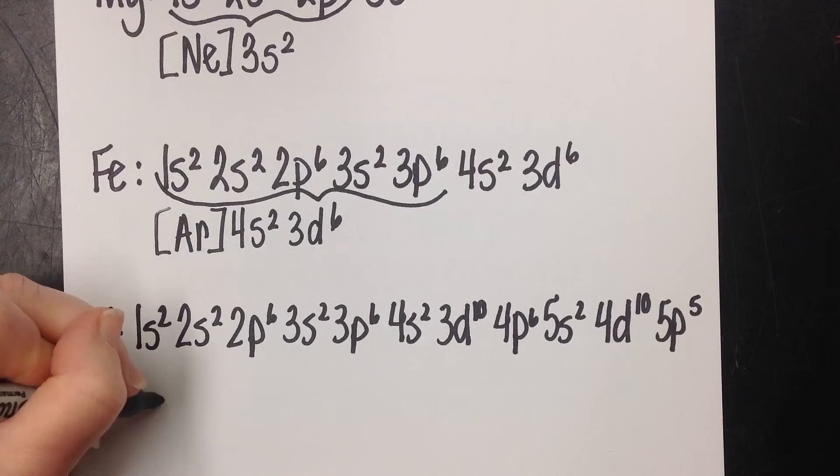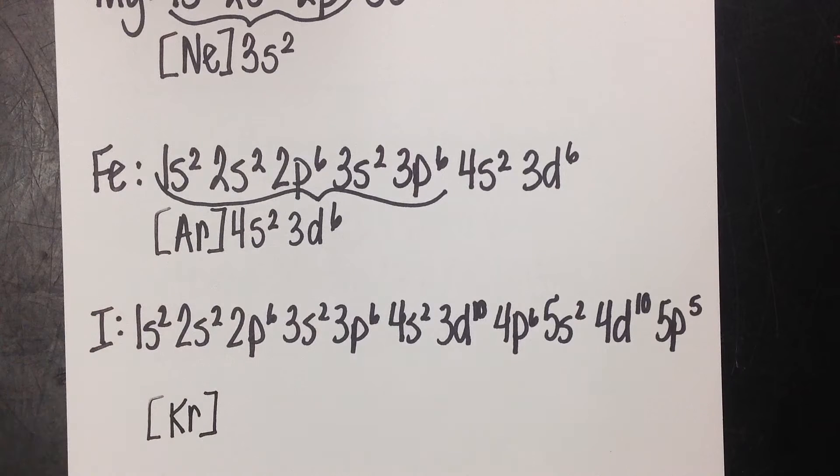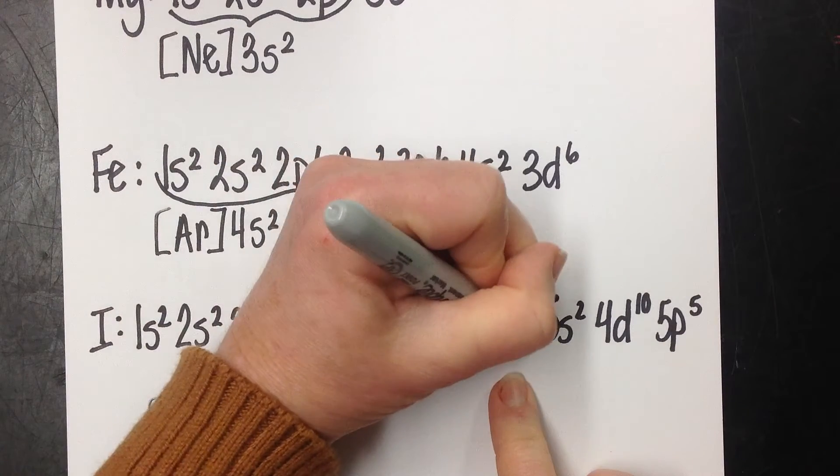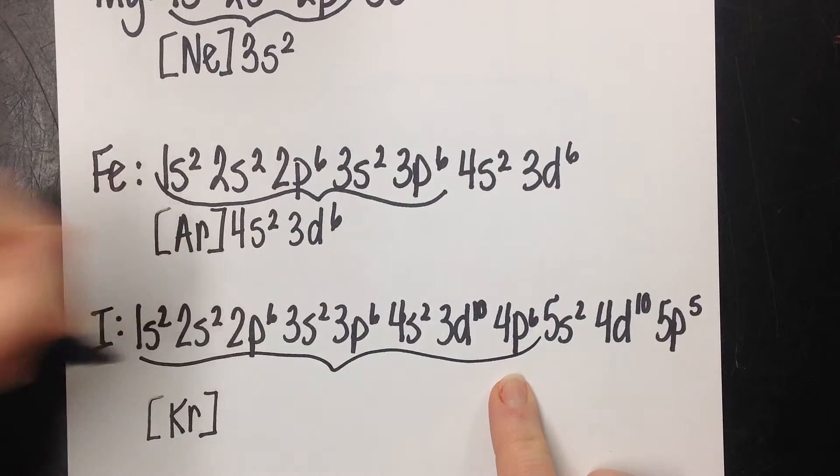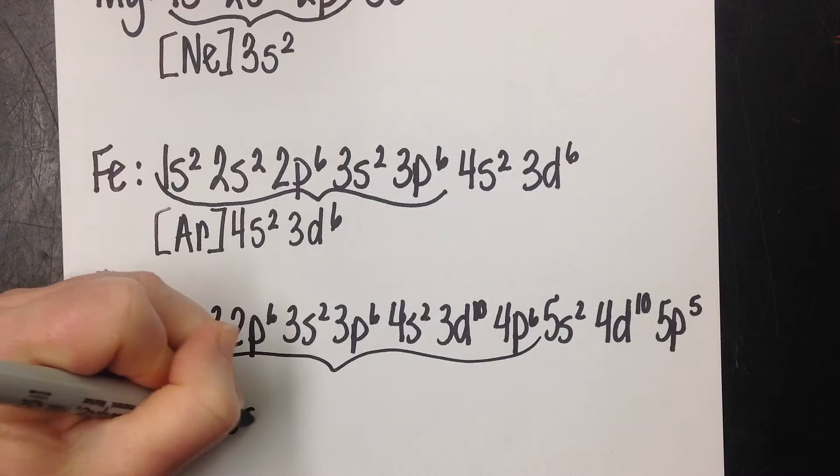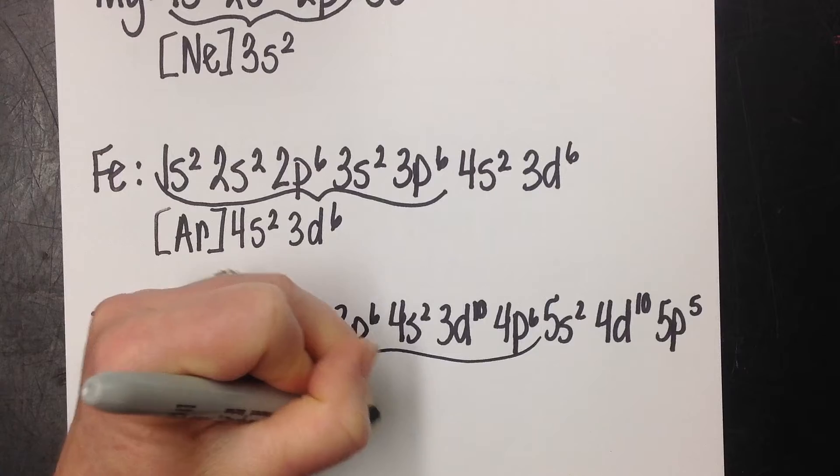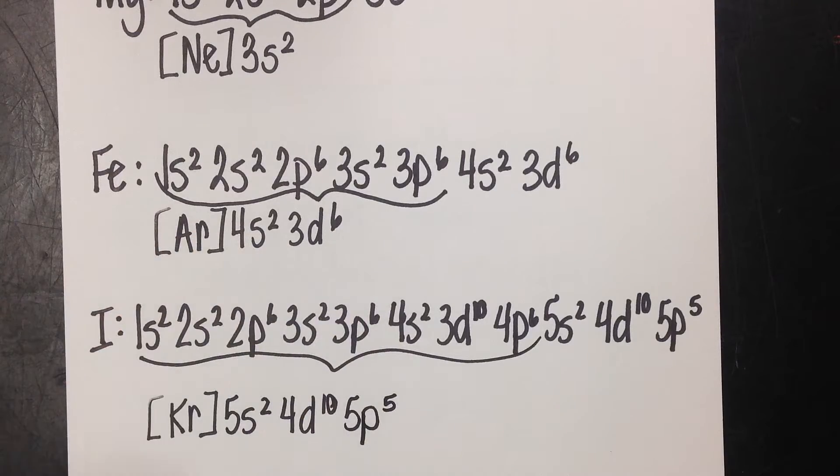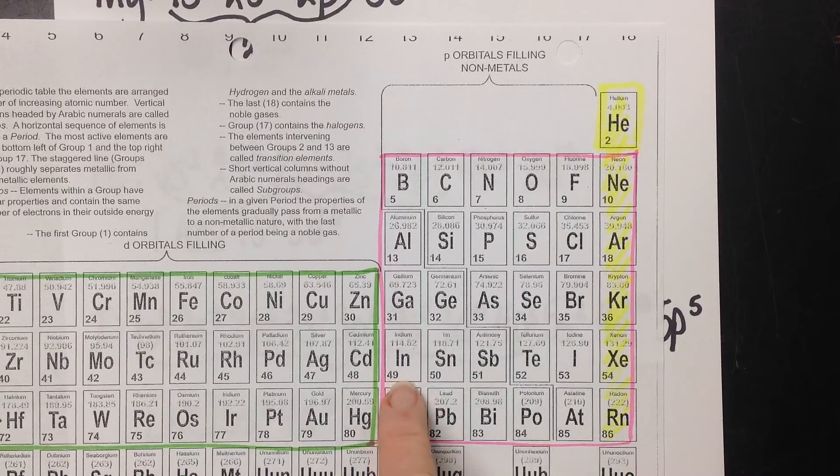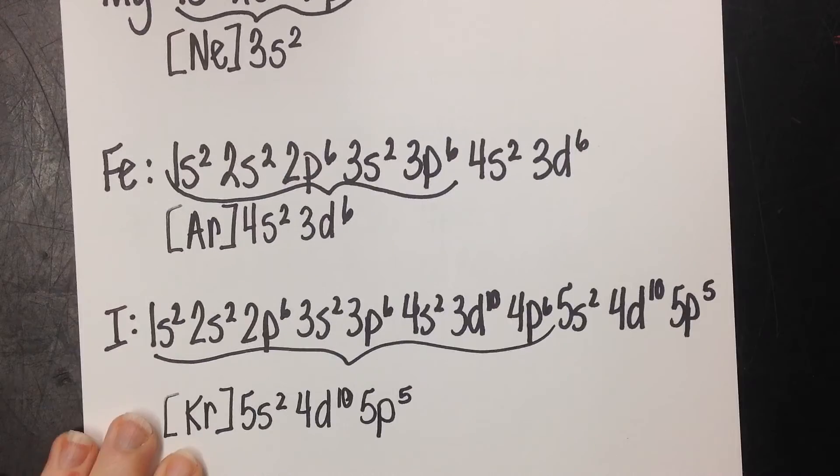Put that in brackets. Then pick up where that left off. That got us all the way here to 4p6. We just took care of all that. You know where krypton is? Good. Let me take you from there. Now we're going to hit 5s2, 4d10, 5p, count over 5 to get to that iodine. 1, 2, 3, 4, 5. There you are. That was actually a pretty significant savings on your very valuable time.